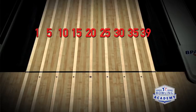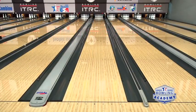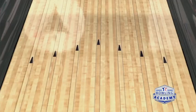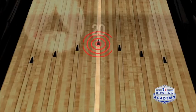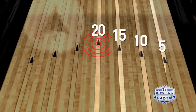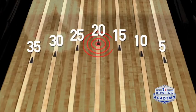We also have what we call arrows on the lane — there are seven of them, located about 15 feet down the lane. They're used for targeting to help you hit the pins more easily. There are three on the right, three on the left, and the middle or fourth arrow is right on board 20, with 19 boards to the right and 19 to the left.